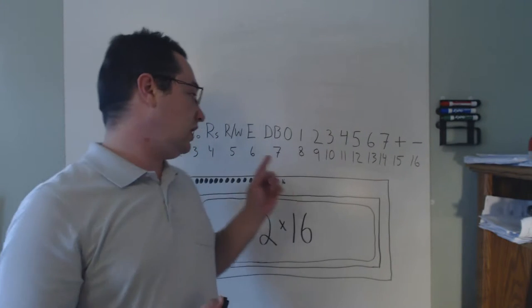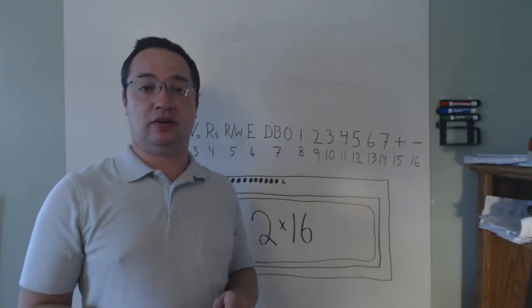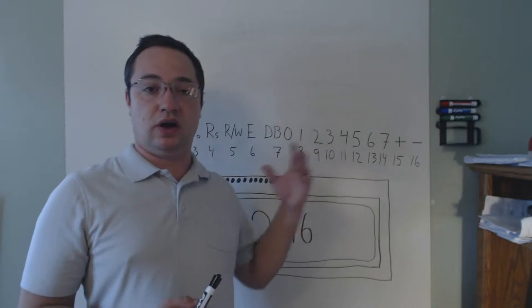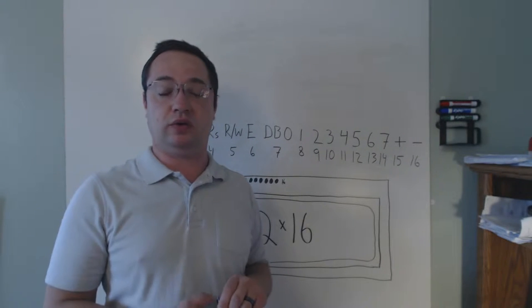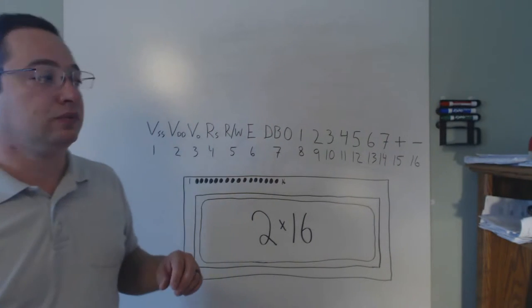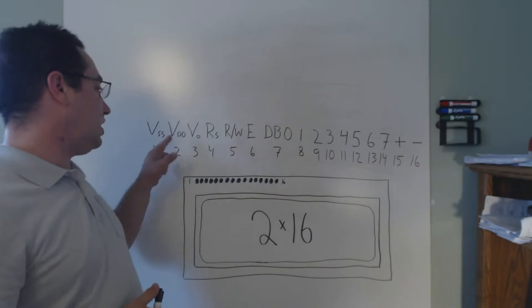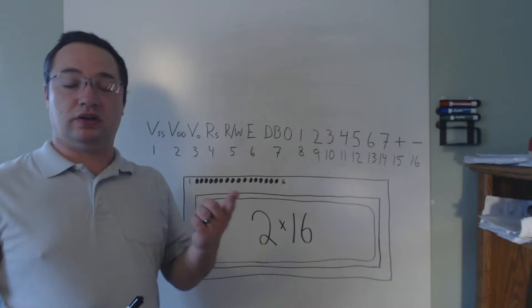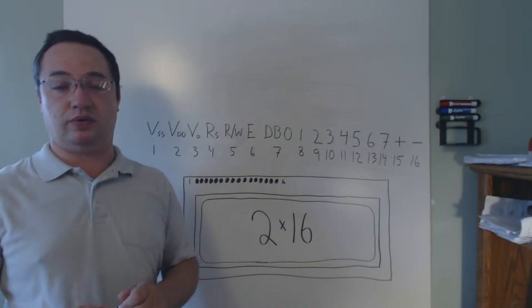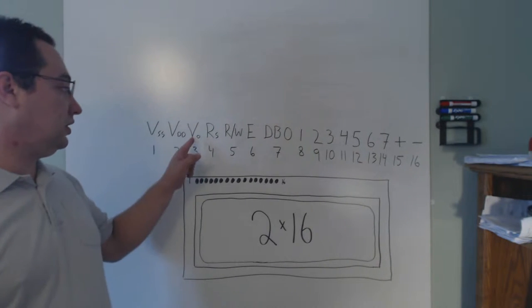The pinout for the screen has 16 pins, numbered 1 through 16. It may look intimidating at first, but once you understand what the pins are and what they do it's fairly easy to wire up the screen. The first two pins, pin 1 and pin 2, are VDD and VSS — that's power and ground. Something to watch out for is that some screens are 5 volt and some are 3.3 volt, so be sure to use the correct voltage for your screen.